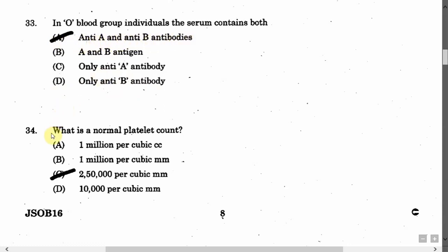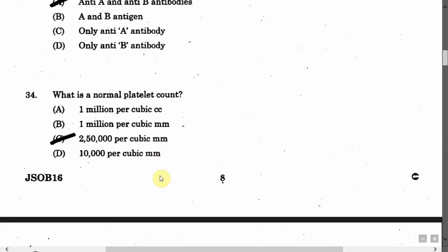The next question is: What is a normal platelet count? The correct answer is Option C, that is 250,000 per cubic mm.